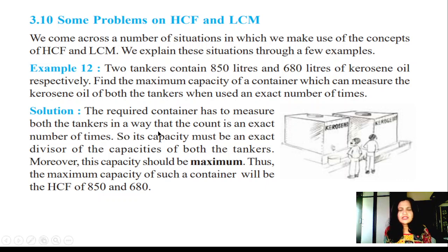The required container has to measure both tankers in a way that the count is an exact number of times, so its capacity must be an exact divisor of the capacities of both tankers. There should be a maximum — this maximum capacity of both containers will come from 850 and 680.